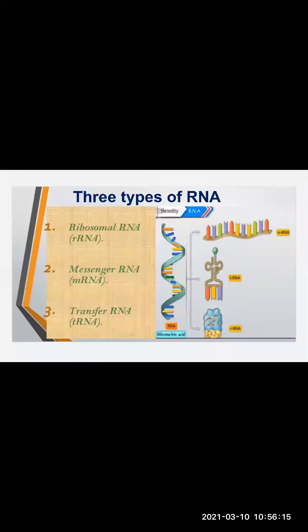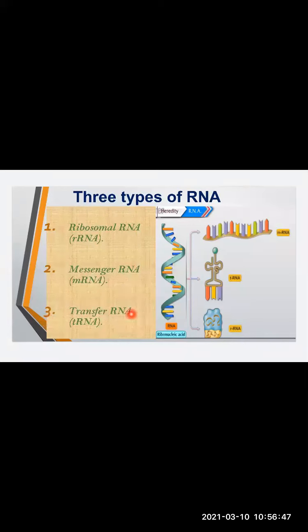There are basically three types of RNA. The first type is called ribosomal RNA, written in short as rRNA. The second type is called messenger RNA, written in short as mRNA. And the third type is called transfer RNA, written in short as tRNA. We will now study each type of RNA in detail.